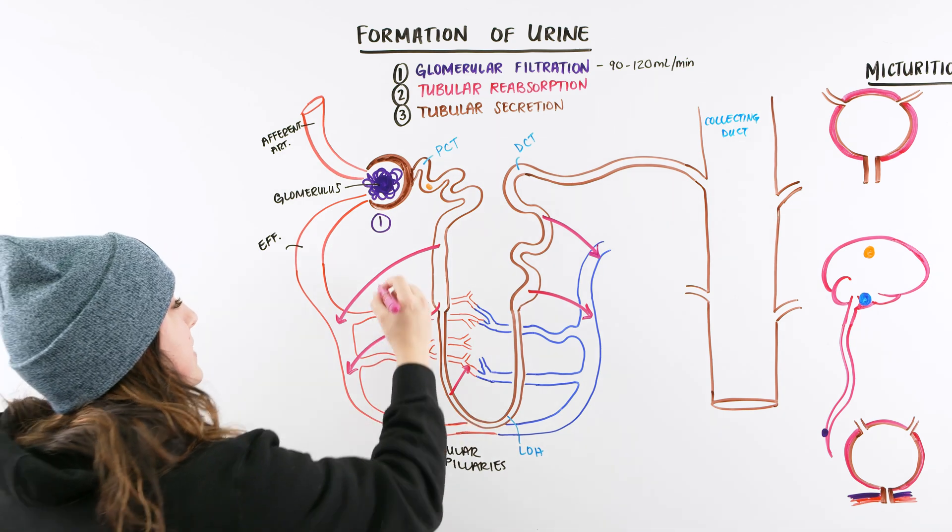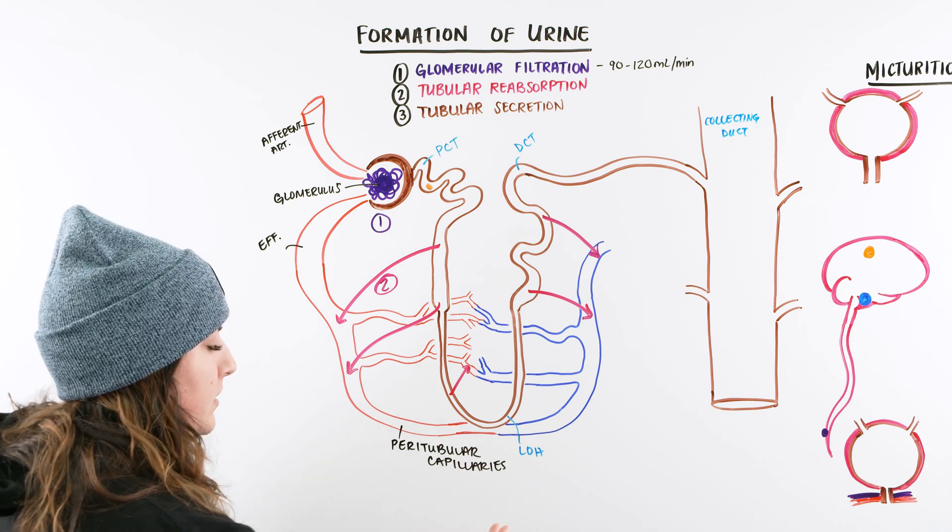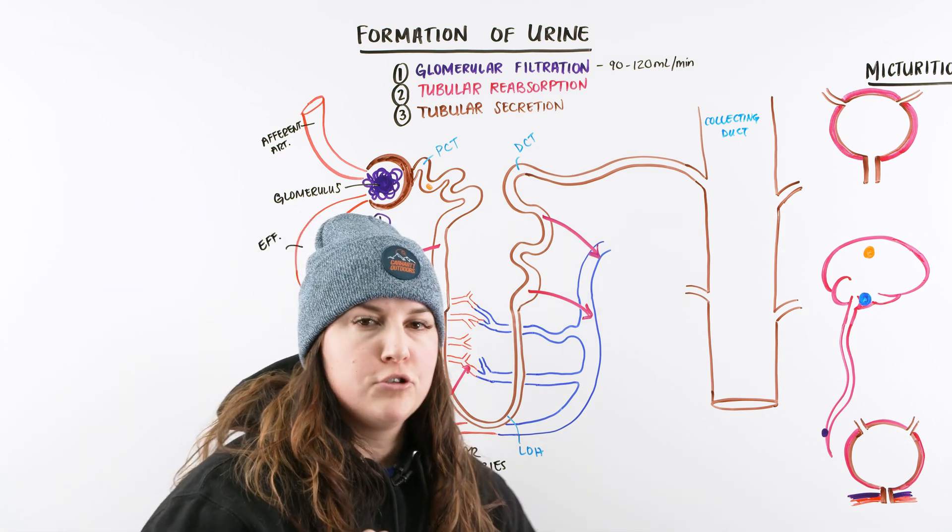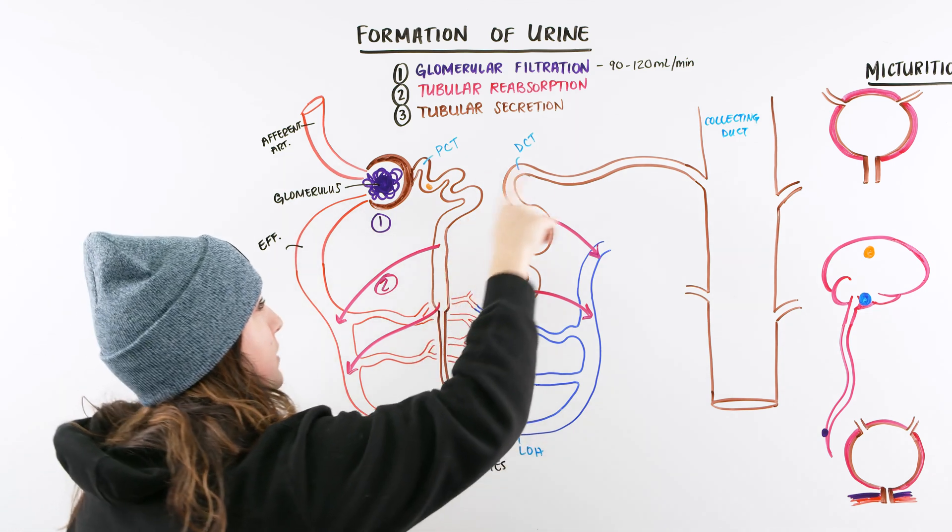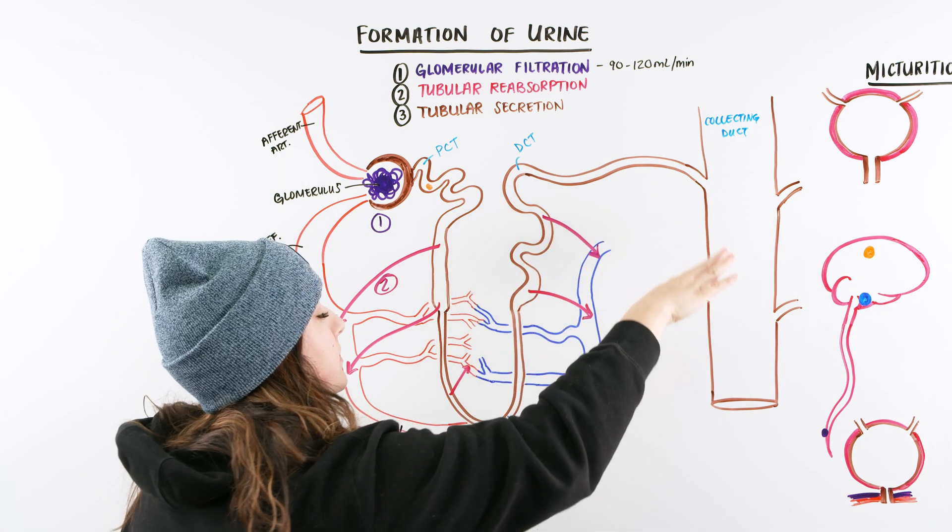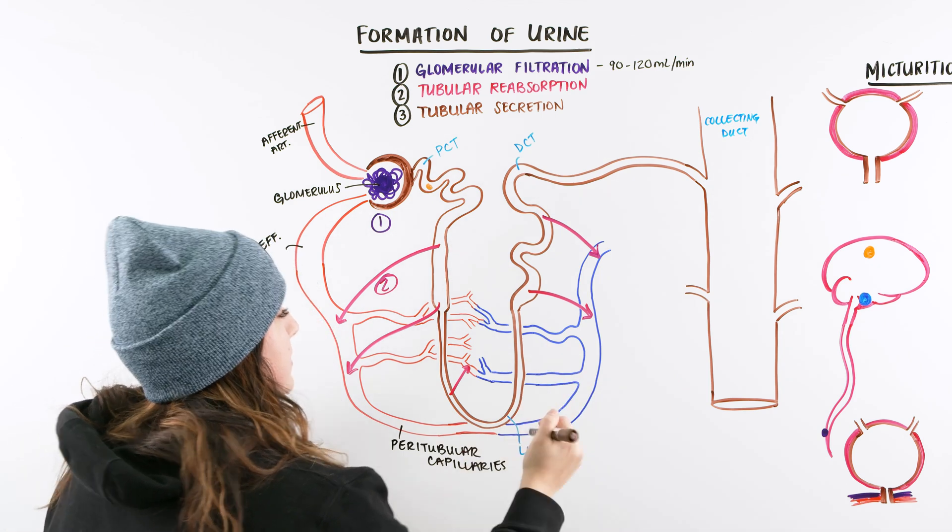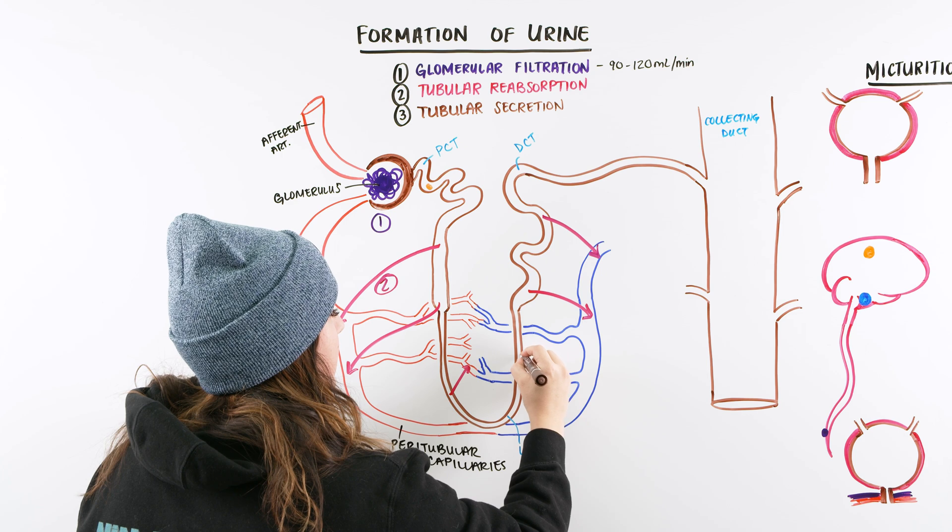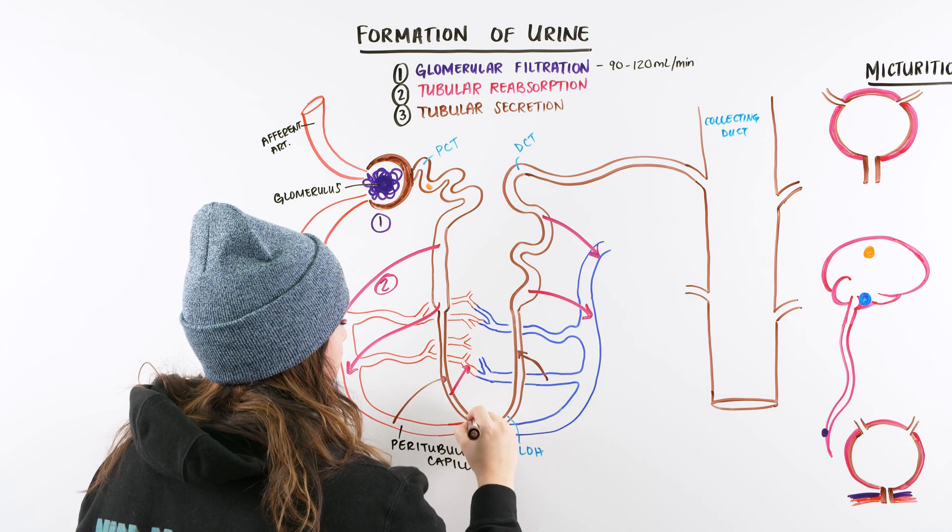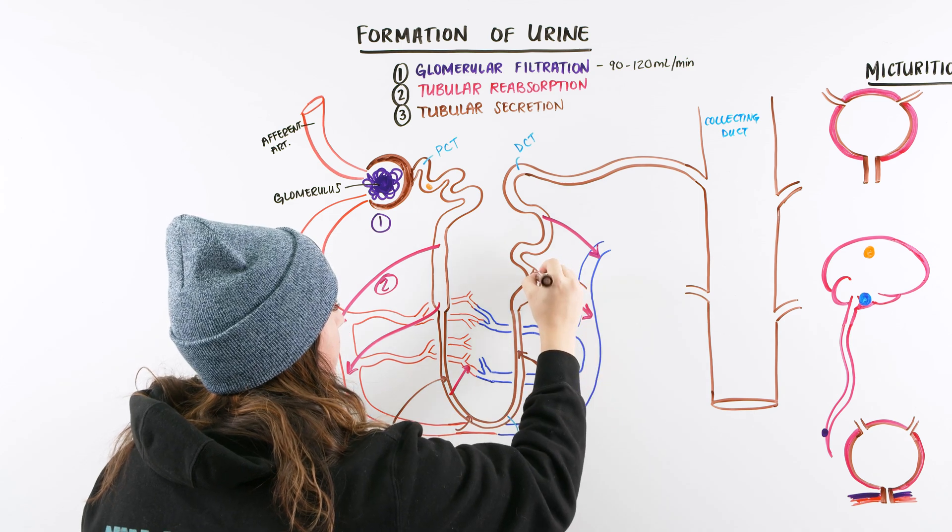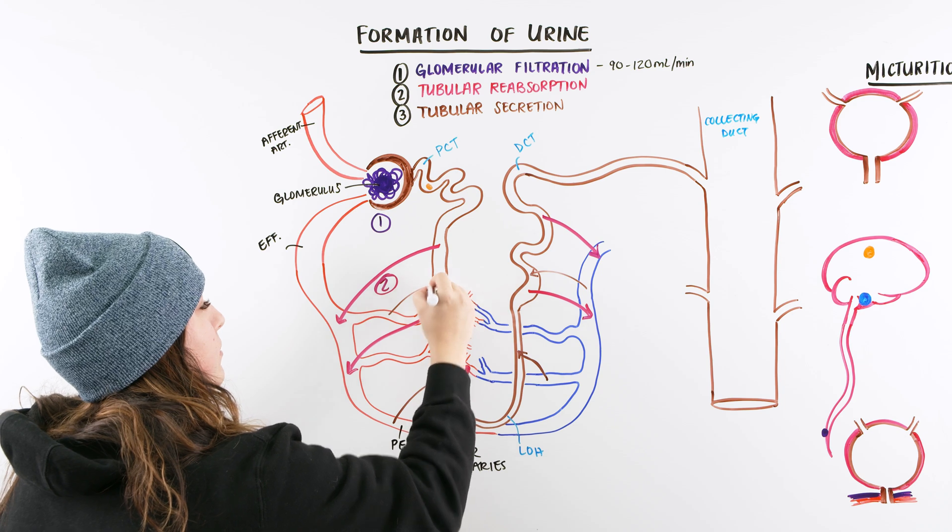But because there is that checks and balances from that tubular reabsorption, then there's also tubular secretion. And the tubular secretion is essentially what's going to go into our nephron, into our distal convoluted tubule, to our collecting duct, and get secreted. So sometimes we give away too much and we got to, or we don't give away enough. We got to get rid of some more. So we start putting it back into our nephron, back into our distal convoluted tubule, our proximal convoluted tubule. It's happening all over here.